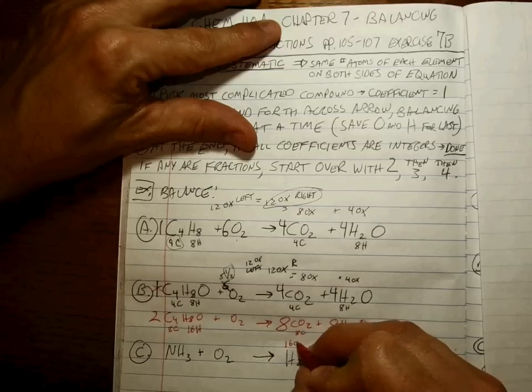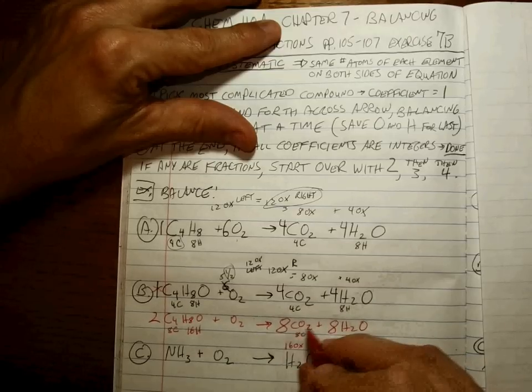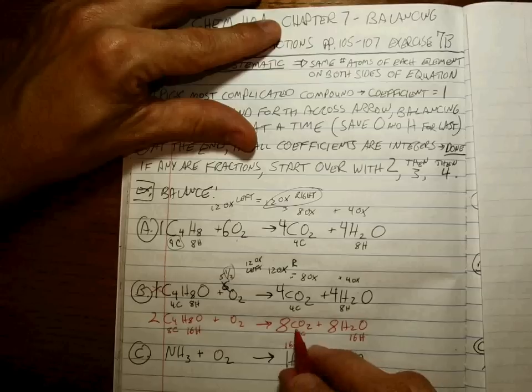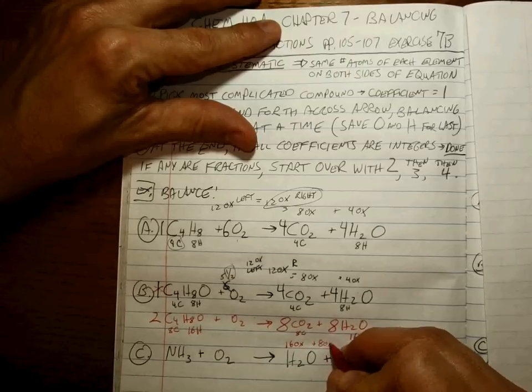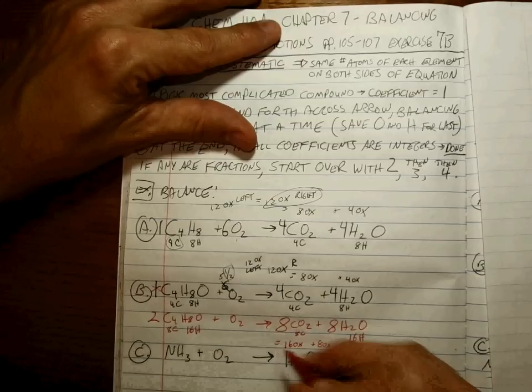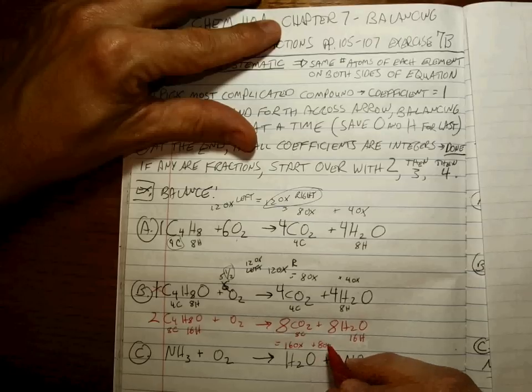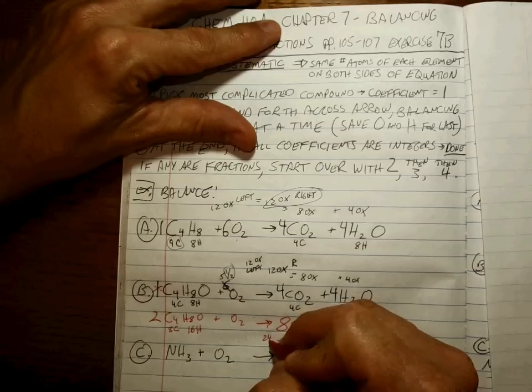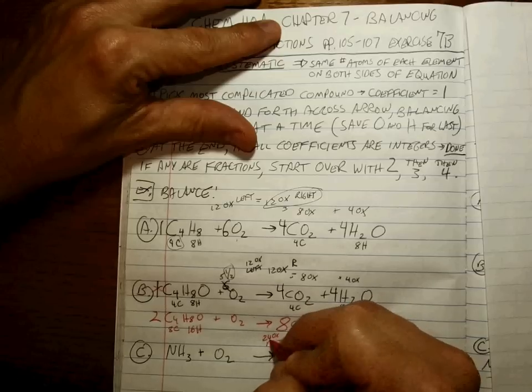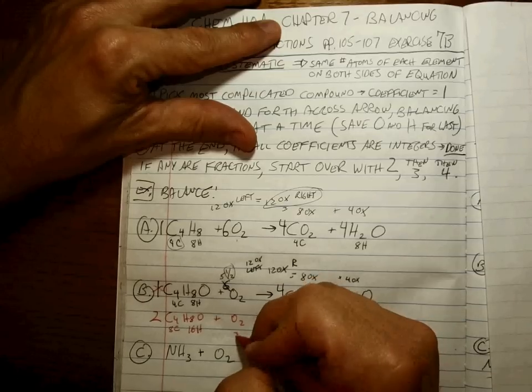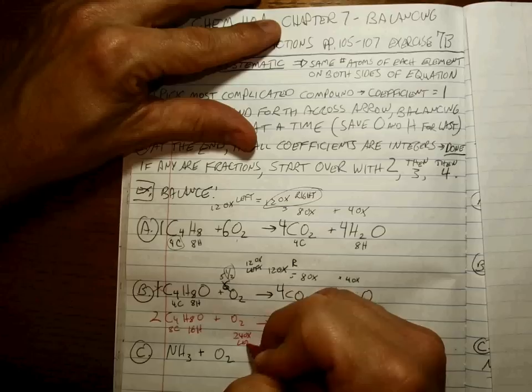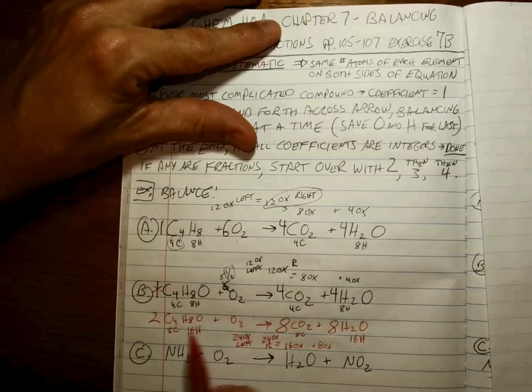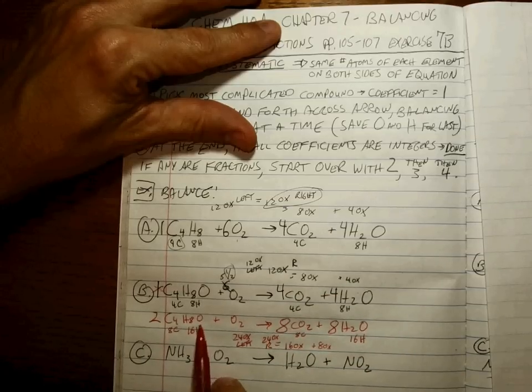That's 16 oxygens from the CO2 and 8 oxygens from the H2O, so 16 plus 8, that's 24 oxygens on the right.